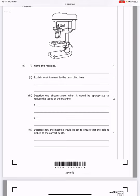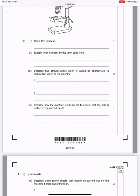Describe two circumstances when it would be appropriate to reduce the speed of the machine. If you're using a bigger drill and you need more torque then you want to slow the speed of the machine. If you are drilling with a smaller drill bit, you would increase the speed of the machine.